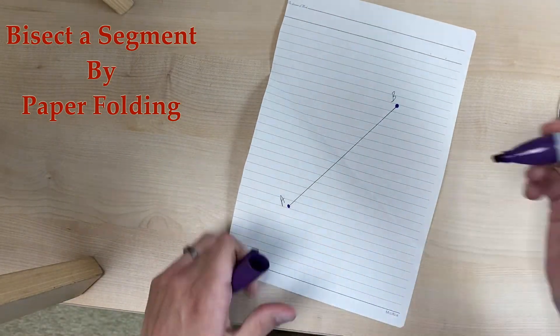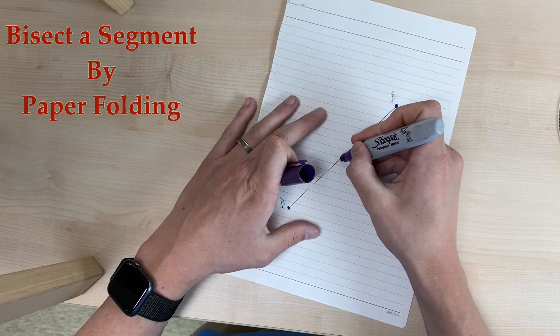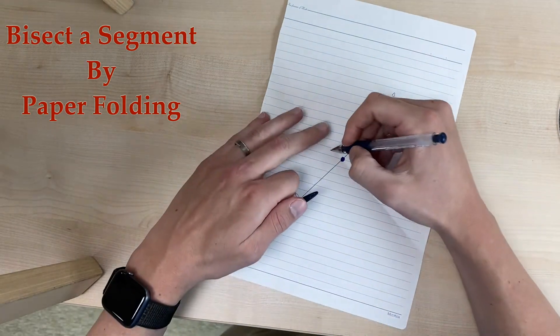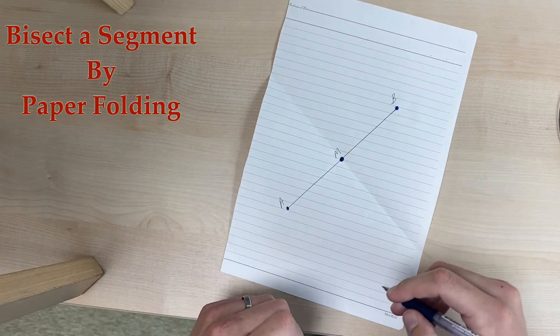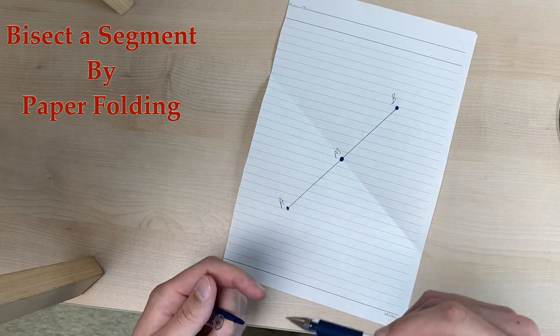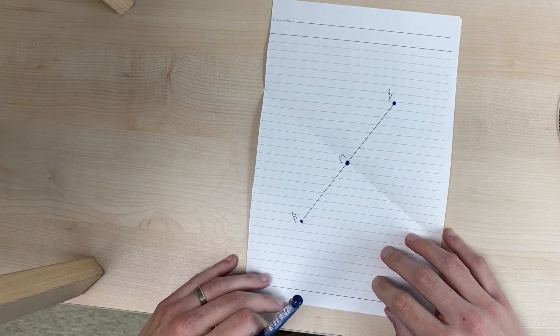So now we can take and we can draw a point on that fold, which would represent the midpoint. So this is our midpoint of AB, which acts as our segment bisector. And that's how you construct a midpoint or a segment bisector by paper folding.